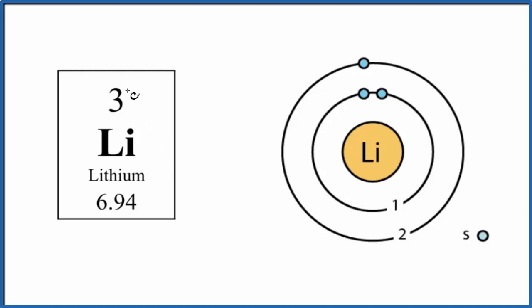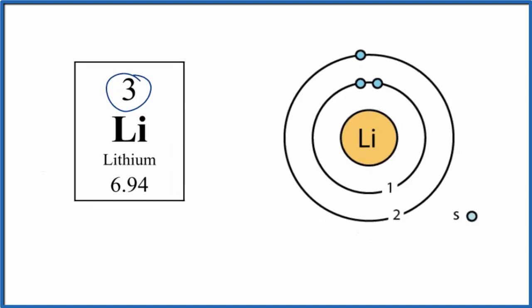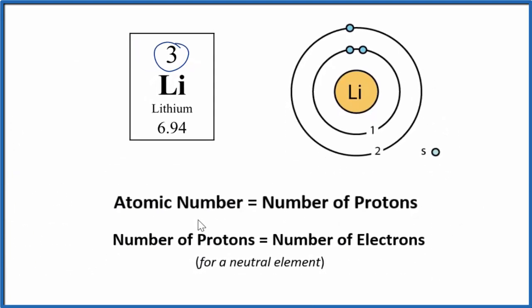So lithium has an atomic number of three. We look at it on the periodic table, and that tells us that we have three protons, because the atomic number, that's the number of protons.